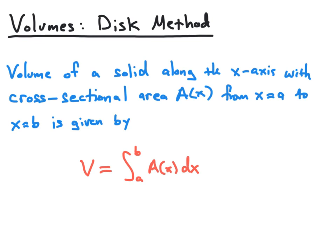then we can compute the volume of our solid by evaluating the definite integral from a to b of our cross-sectional area function A of x dx. This integral formula can be applied to any solid, as long as the values of a, b, and the cross-sectional area function A of x can be determined.